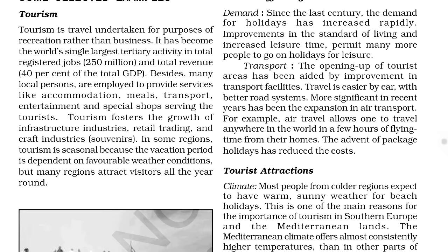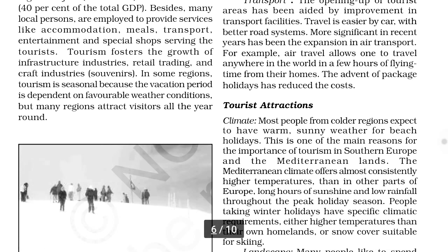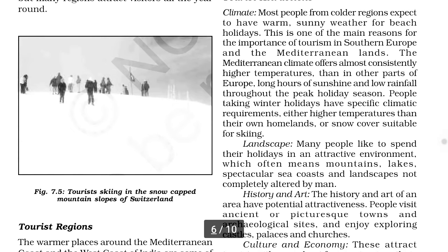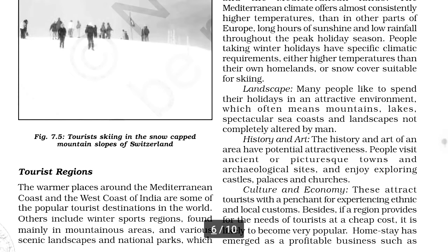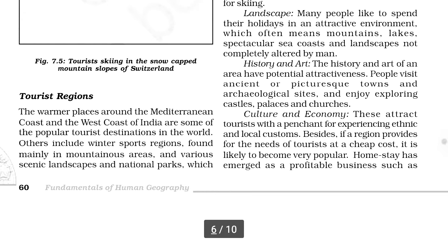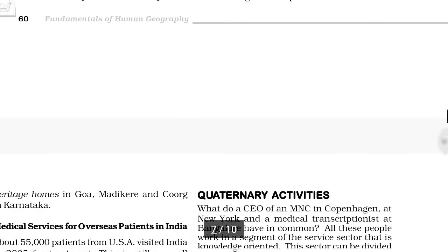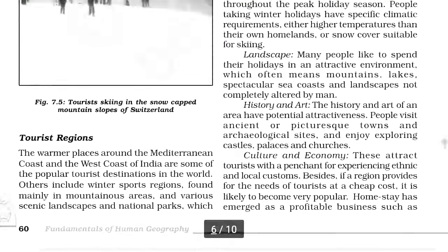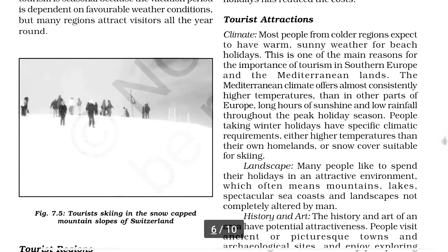Next are tourist attractions — these are the things that attract tourists. The factors are: climate, landscape, history and arts, culture, and economy. All these things inspire people to visit an area. Particularly, climate is important — warm areas like the Mediterranean attract people living in cold regions.